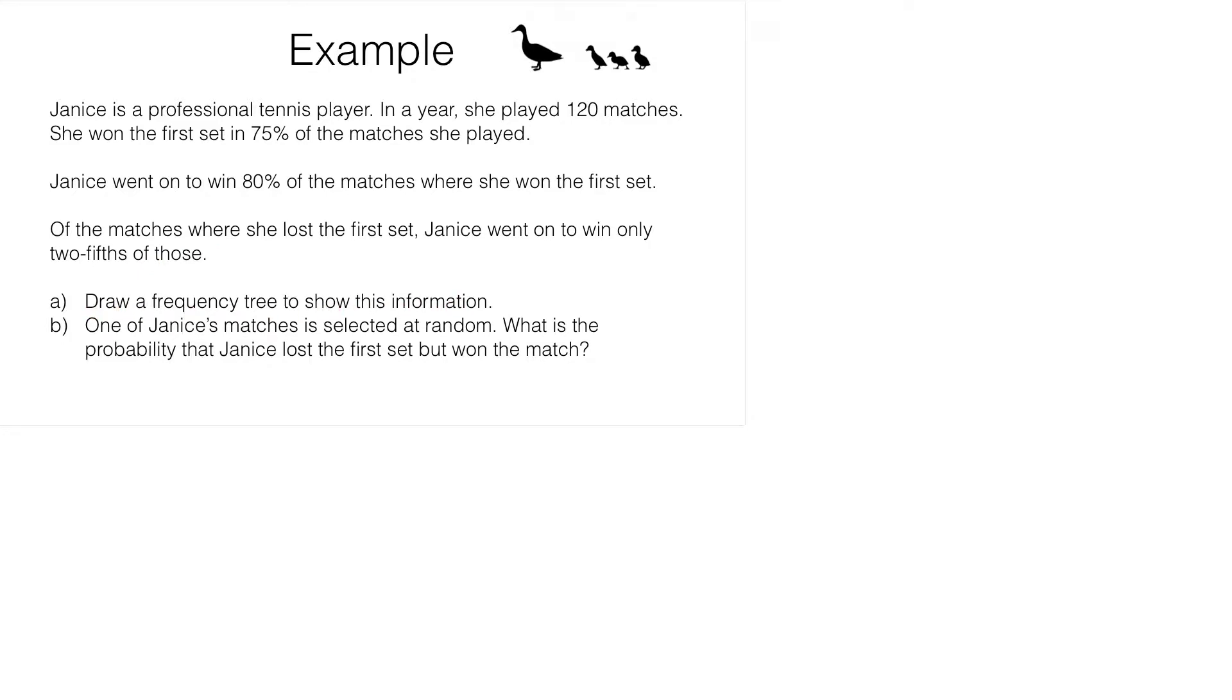We need to draw a frequency tree to show this information. There are two things going on here. We are getting information about whether she won the first set or not, and then whether she went on to win the match. So it's possible that she could win the first set and win the match, win the first set but lose the match, lose the first set but win the match, or lose the first set and lose the match. We can show those four outcomes using a frequency tree like this.